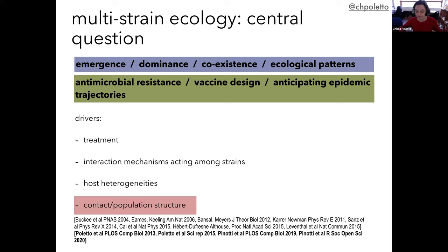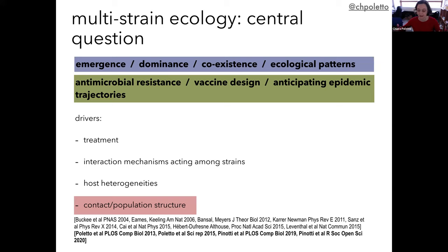I'm interested in how the human population behaves and interacts, and how that may affect the ecological dynamics between strains, given that strains spread on top of this population. My specific focus is on contacts — the structure of the population network. This is a field with some interest, and I'm reporting some publications here. If I consider two pathogens or two strains with different traits like different transmissibility or duration of infection, the typical question is: which one is favored, which one will dominate? The answer depends on the structure of the population.